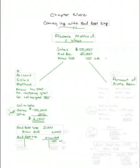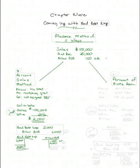Let's post our entries. Bad debt expense posted for $2,000. Allowance posted for $2,000. The balance in bad debt expense is $2,000. The balance in the allowance account is $2,100.